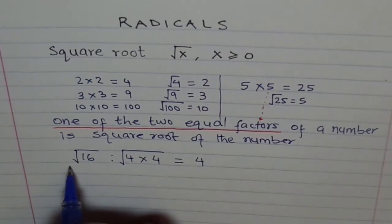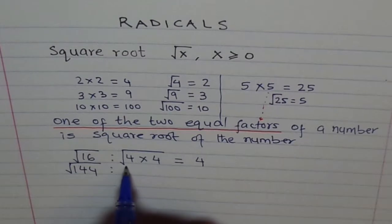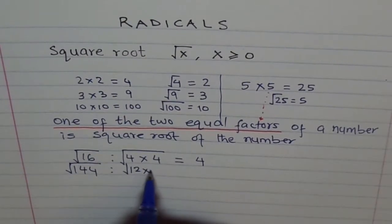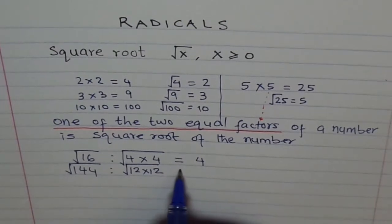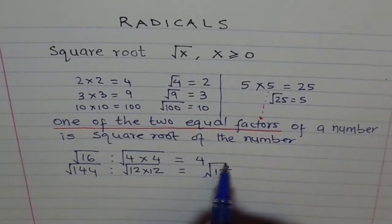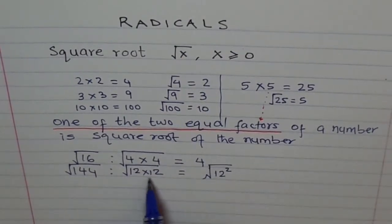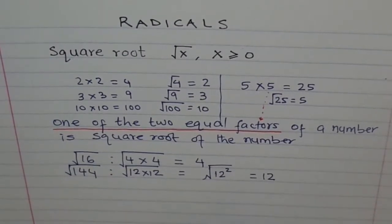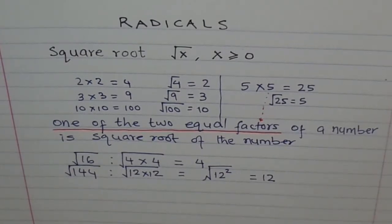Let's go for a big number: 144. 144 is 12 times 12. Sometimes we can write 12 times 12 also as 12 squared. One of the two factors is 12, which becomes the square root of 144. This is another way of representing the same thing.